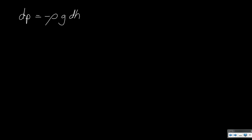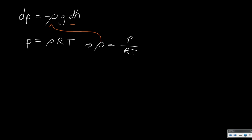In the hydrostatic equation we have the change in pressure, but we also have the density on the right side, so this is not yet something we can work with. We are mainly interested in the pressure change, so let's use the equation of state to get rid of density and change it into pressure. Pressure equals rho RT, which means density equals pressure divided by RT. Substituting rho into the hydrostatic equation gives dp equals minus p divided by RT times g dh.